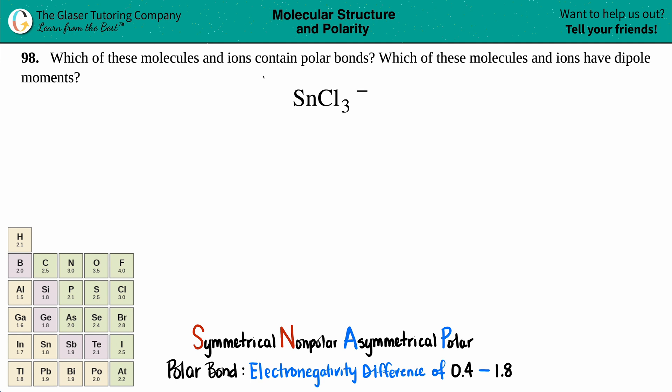Number 98, which of these molecules and ions contain polar bonds, and which of these molecules and ions have dipole moments? And then we have SnCl3 minus. Okay, so I see a negative charge here, that means we're dealing with an ion. Ions, remember, are charged species.